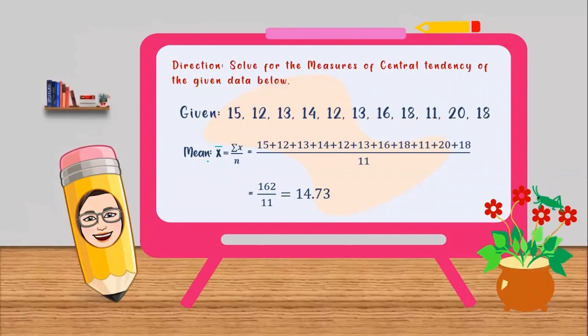Let's use the formula x bar equals summation of x over n. Let's substitute all the values. Let's add them all, all over 11. 11, because we have 11 number of values. The total of all the values is 162 over 11. So let's divide this, and that is equal to 14.73.